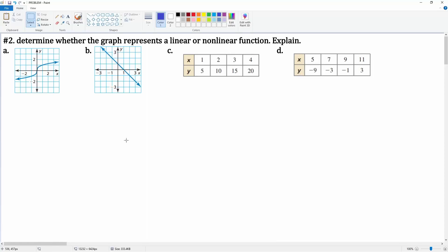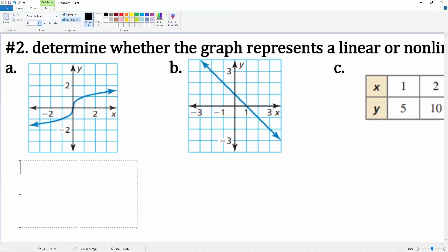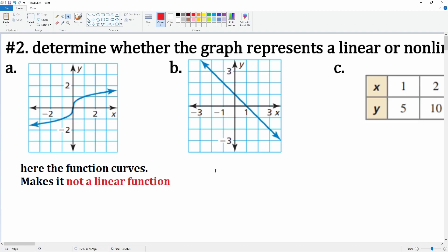Chapter 3 number 2: determine whether the graph represents a linear or nonlinear function. When it's a graph like this, all you have to see is if it curves or it's straight. Here the function curves, which makes it not a linear function. So this is not a linear function because it curves.